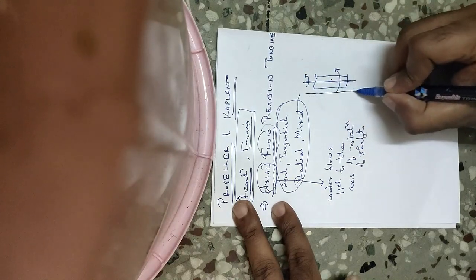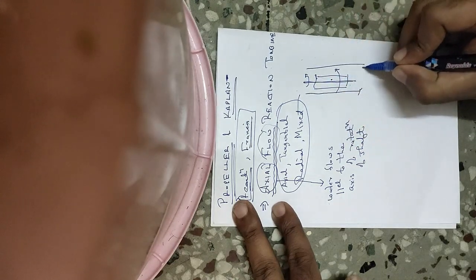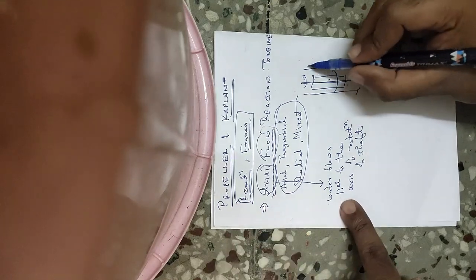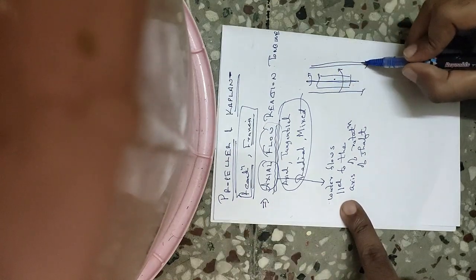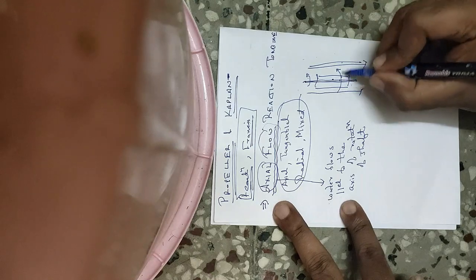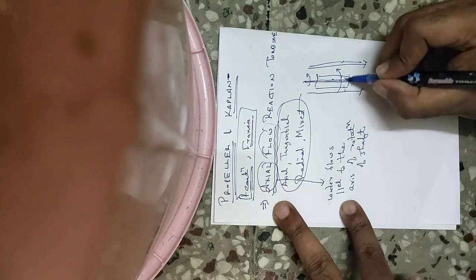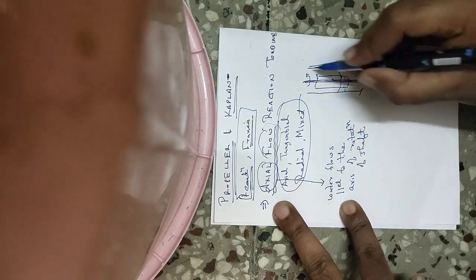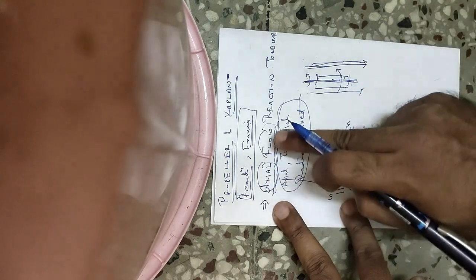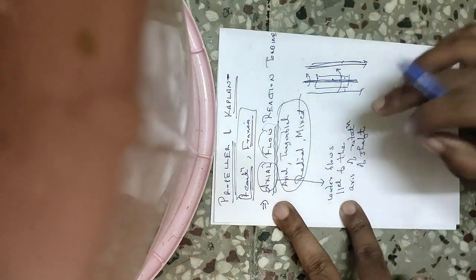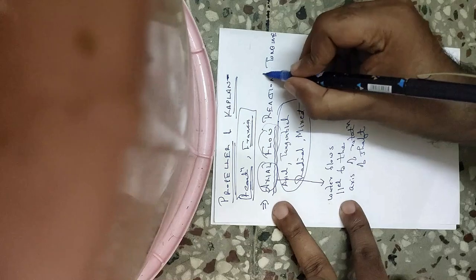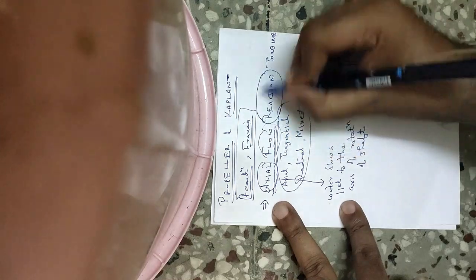So the water comes and flows in the direction parallel to the axis of rotation — the direction of water flow and the axis of rotation are parallel to each other. That is your axial flow turbine. The second component is that it is a reaction turbine.